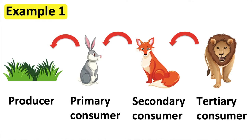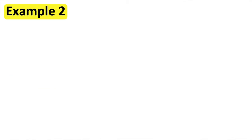The plants are the producers. The rabbit is the primary consumer. The fox is the secondary consumer. The lion is the tertiary consumer.